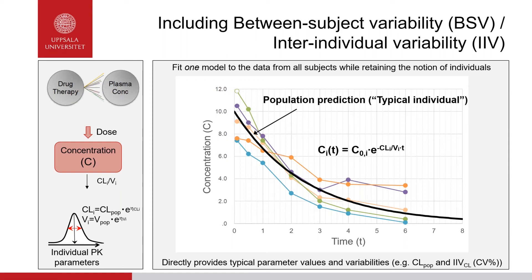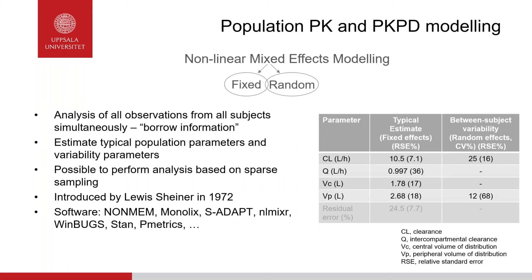The individual parameter values can be obtained in a post-hoc step. The method we apply is called non-linear mixed effects modeling — called 'mixed' because we estimate both fixed parameters describing typical trends and random parameters describing variability. We analyze all observations from all subjects simultaneously, borrowing information between subjects, arriving at one model and one set of parameters for all subjects. It is possible to perform this analysis on sparsely sampled data, and sampling times can differ between subjects. NONMEM is the most commonly used software for these analyses, introduced by Sheiner in 1972.